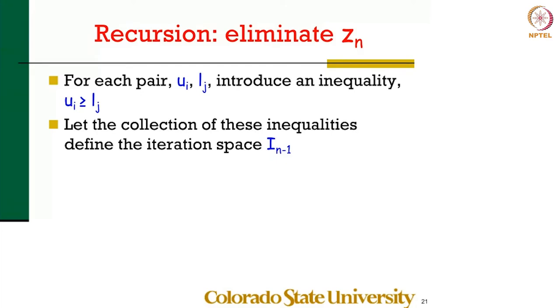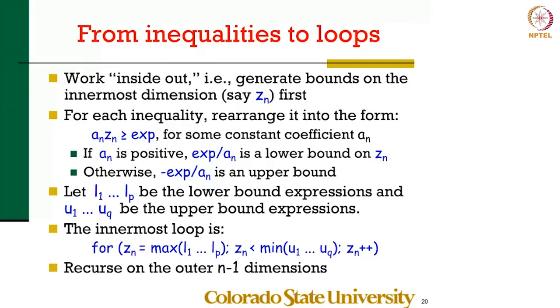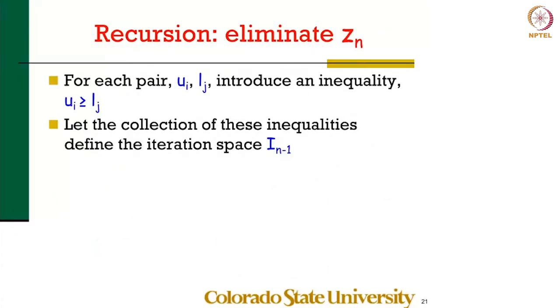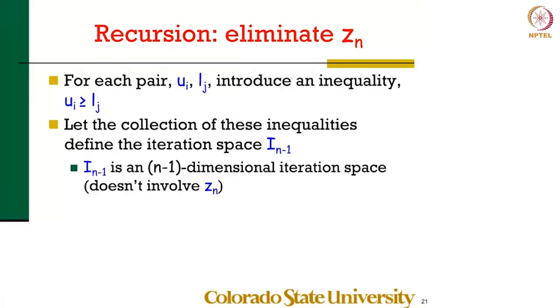You work your way inside out. At each step, you do this that I have in the previous slide: construct the loop, then eliminate z_n and get pairwise all the inequalities involving some lower bound expression and some upper bound expression, and you are done.